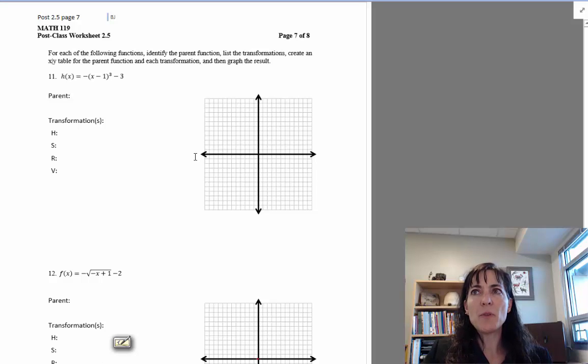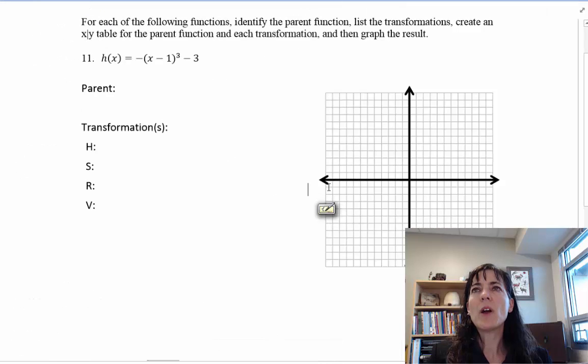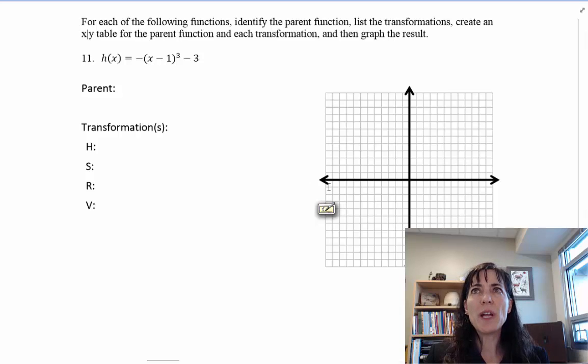Let's look at another one. This is the top of page 7. Let's see if I can expand that at all. For each of the following functions, identify the parent, list the transformations, create an XY table for the parent in each transformation, then graph the results.